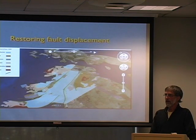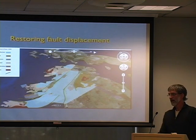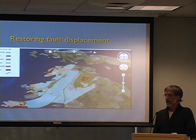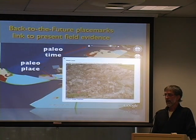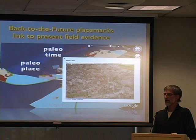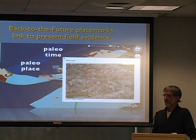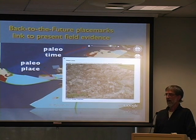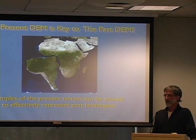I'm taking a map of the northwest part of Ireland here, restoring fault displacements so that the slices of crust that Ireland's made up of go back to where they were in the Paleozoic - a quarter to a half billion years ago. We can do one extra thing here: we can link those paleo places as they existed on the Earth's surface, say 400 million years ago, using what I call a back-to-the-future placemark. We can take those places and link them to the present-day evidence for that tectonic model. In the pop-up image here, you see the pillow lavas - these volcanic rocks that flowed underwater - that we use as evidence to suggest that this place used to be an arc. The present DEM is key to the past DEM.